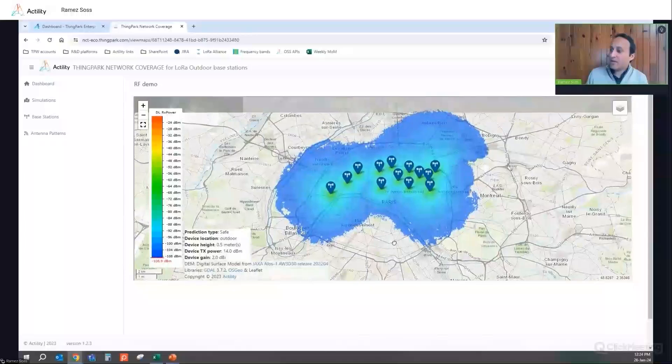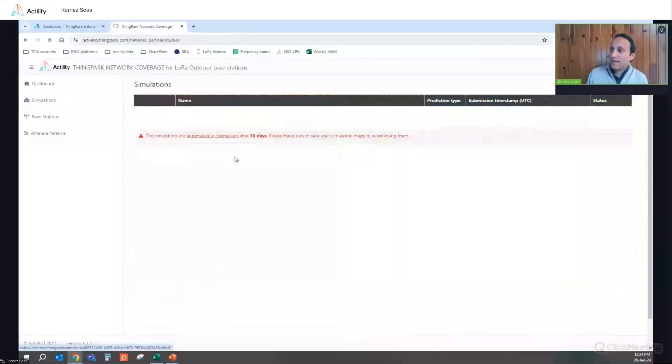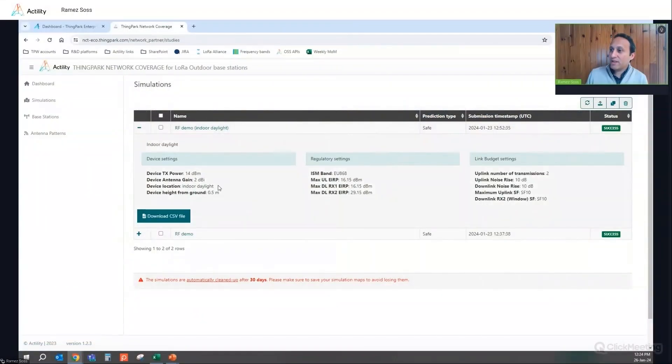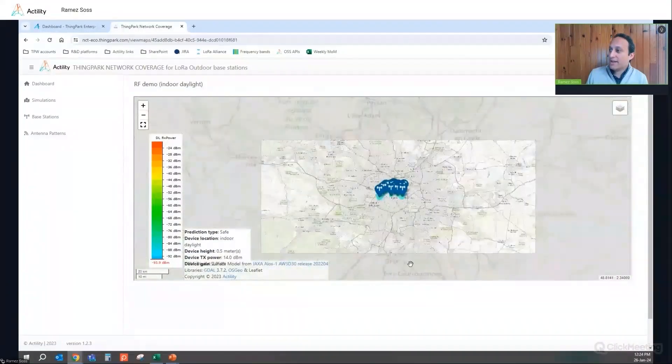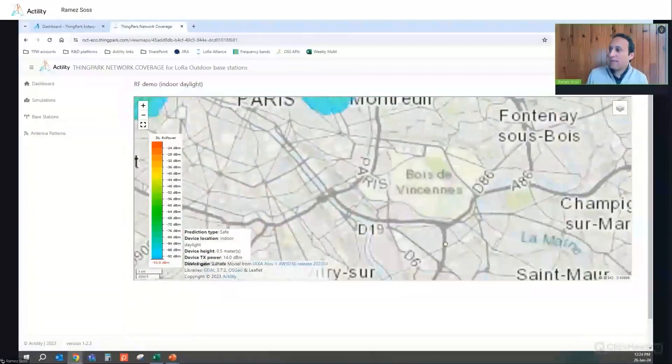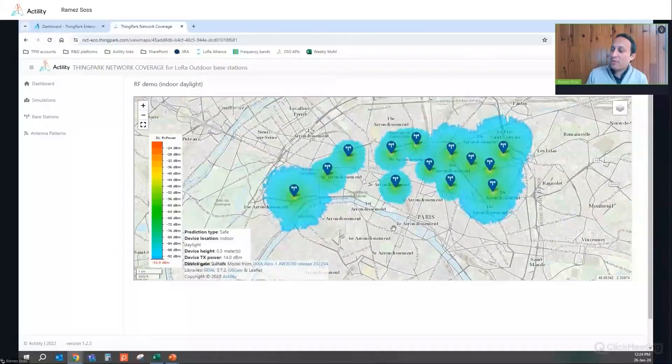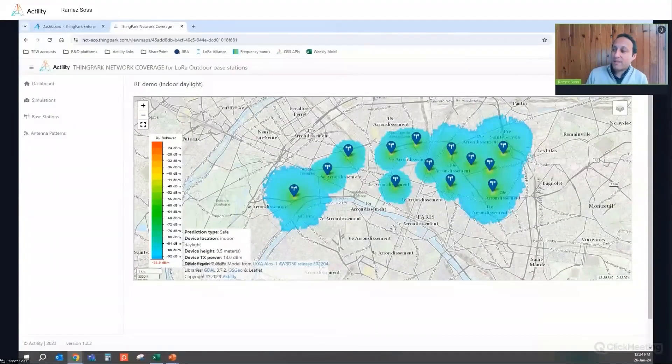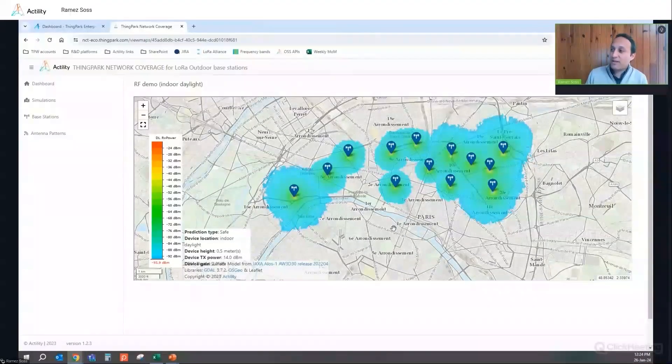And if I do the same thing from exactly the same parameters, but just replacing outdoor simulation with indoor daylight device location, so you can see that the tool predicts a different coverage. Of course, the coverage is shrunk with respect to what we had with the outdoor simulation. And that's why the tool can be used to help you analyze several deployment scenarios. And you can play with the design assumptions and with the device location in order to predict the coverage of each specific case.